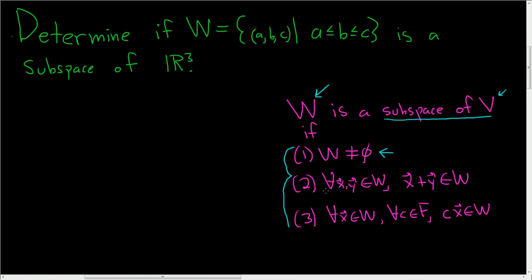The second condition says that for all X and Y in W, the sum of the vectors, X plus Y, is also in W. This is called closure under vector addition.